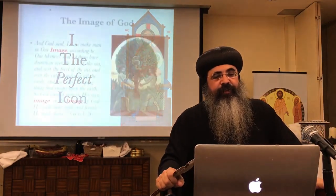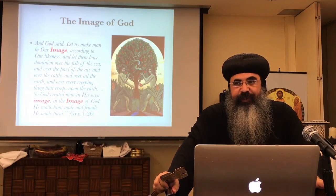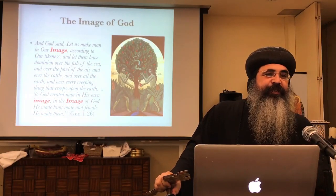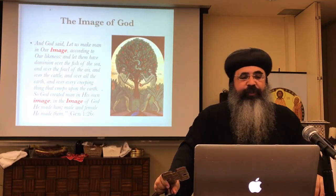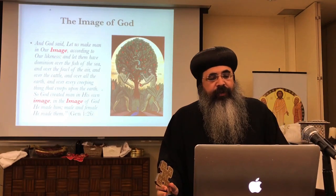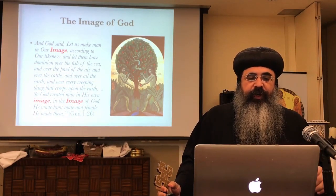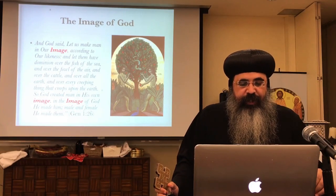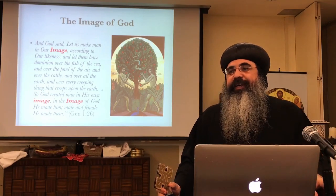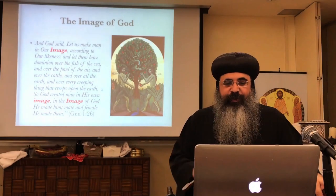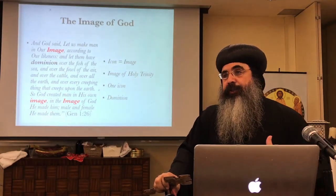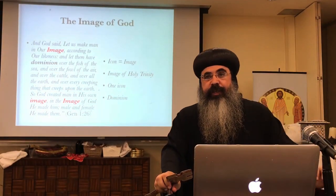The perfect icon. The first time the word comes in the Bible is in the first chapter. God said: 'Let us make man in our image according to our likeness; let them have dominion over the fish of the sea, over the fowl of the air, over the cattle, over the earth, and over every creeping thing that creeps on the earth. For God created man in His own image; in the image of God He made him — male and female He made them.' This passage is familiar, but the image of God — we know — is the icon. That is actually the original word in Greek.